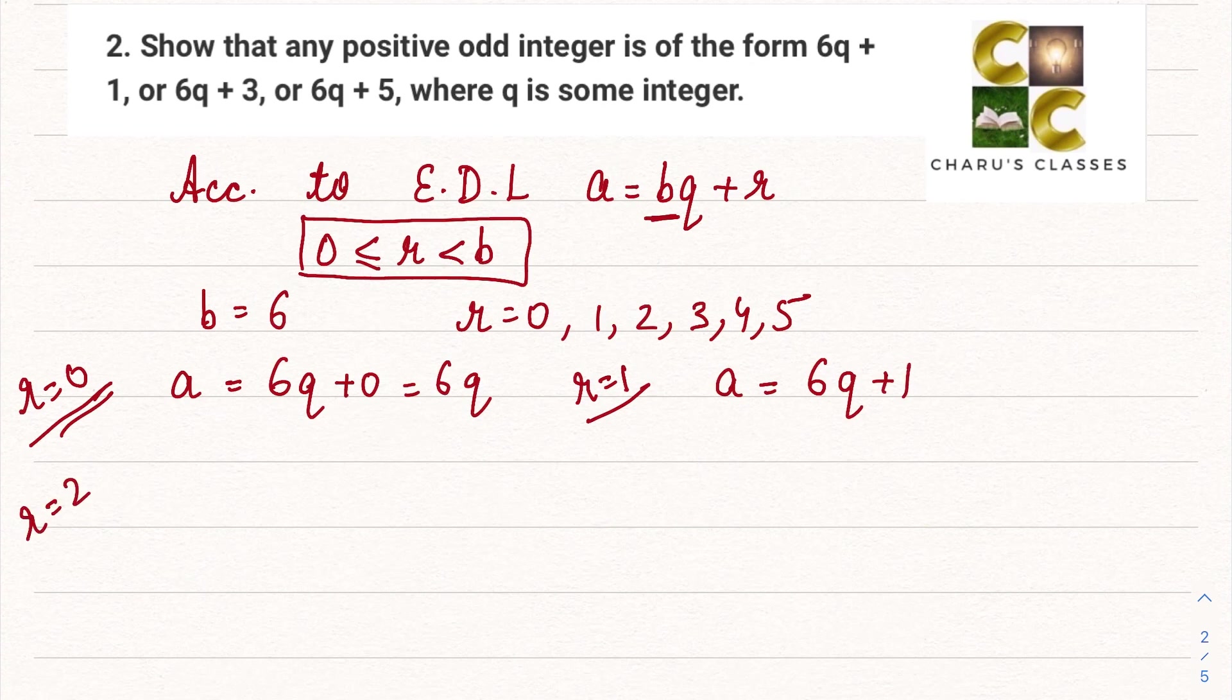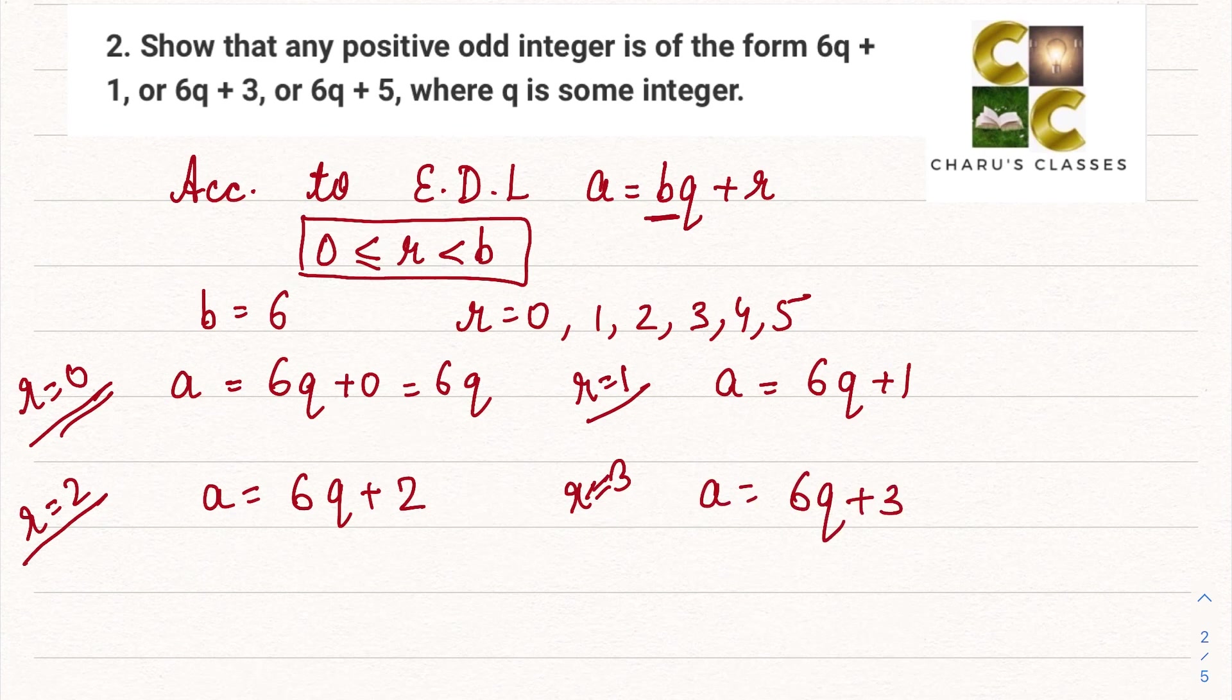If r is equal to 2 then a can be written as 6q + 2. If r is equal to 3 then a can be written as 6q + 3. If r is equal to 4, a is equal to 6q + 4. And if r is equal to 5, then we can write a as 6q + 5.